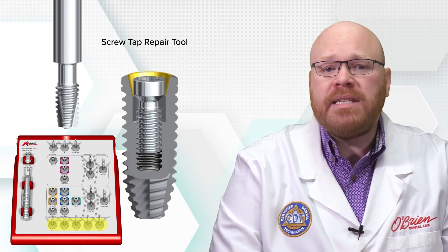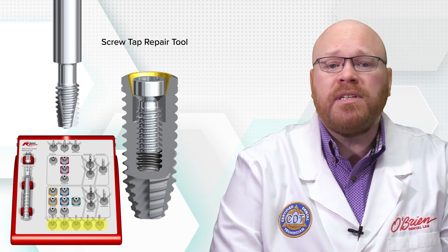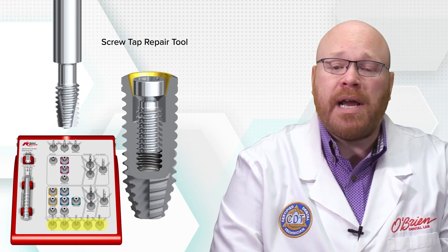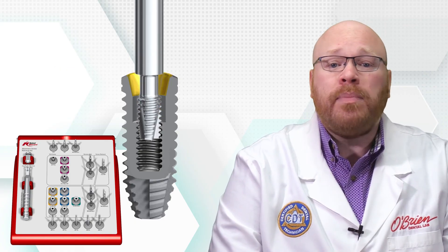There are five different thread sizes used in Nobel BioCare implants and you'll need to contact tech support to determine the thread size of the implant you're trying to repair. Once you know your thread size, you can attach the appropriate tool to the short handle, place the tool in the implant, and turn clockwise to repair.